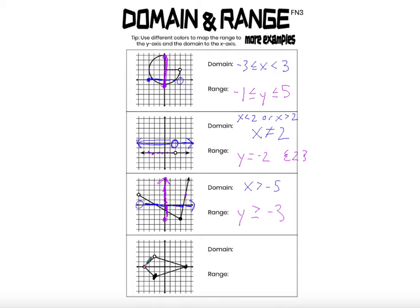The domain has an open dot at negative 4. So x cannot be less than negative 4, and it also can't equal negative 4 because we have an open dot. But x can be anything bigger than negative 4, all the way up to x equals 4. So we represent the domain as negative 4 < x ≤ 4.